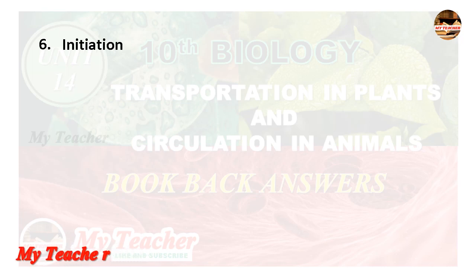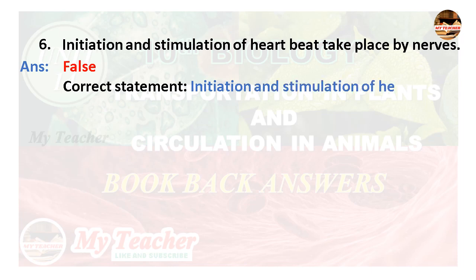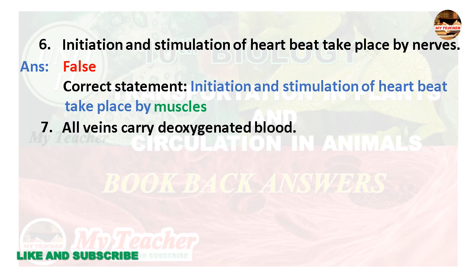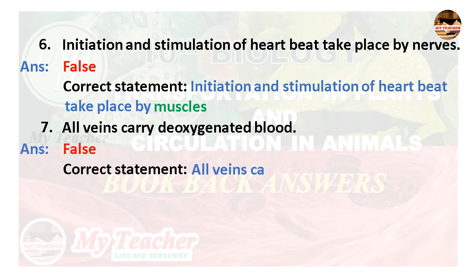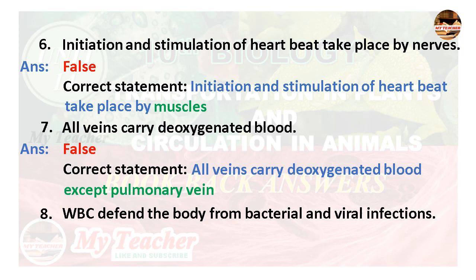Sixth: Initiation and stimulation of heartbeat take place by nerves — False. Correct statement: Initiation and stimulation of heartbeat take place by muscles. Seventh: All veins carry deoxygenated blood — False. Correct statement: All veins carry deoxygenated blood except the pulmonary vein. Eighth: WBC defend the body from bacterial and viral infections — True.